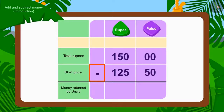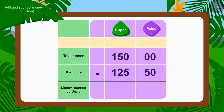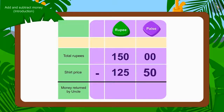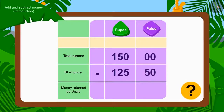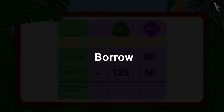Children, while subtracting, we first subtract the number of Paise. Is there any Paise for Rs. 150? No! Then how will we subtract 50 Paise of Rs. 125.50 from 0 Paise of Rs. 150? Do you remember the borrowing process learned in the lesson of subtraction? Here, we will use the borrowing process.